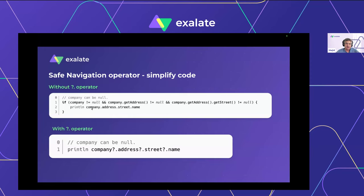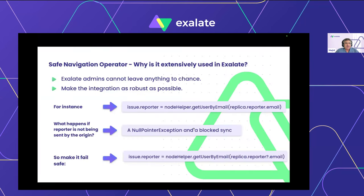A good programmer would put an if-condition: if all those objects are not null, then print it out. That works fine, but using the safe navigation operator makes the syntax really simple — it does all that null-checking for you in the background. I see a lot of clients using the safe navigation operator in Exalate scripts — it's very good practice, but you need to understand clearly where to use it.